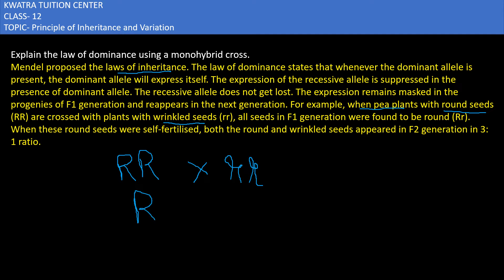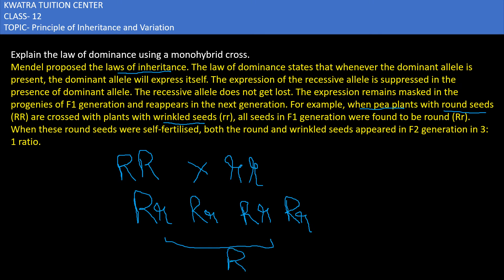In the F1 generation, the offspring will all be capital R small r, capital R small r, capital R small r, and capital R small r. The phenotype in all cases will be round shape, because capital R is dominant and it suppresses the expression of small r. So the F1 generation will be round.